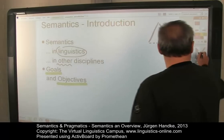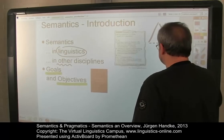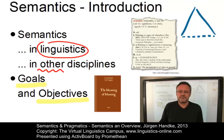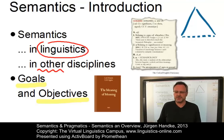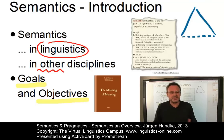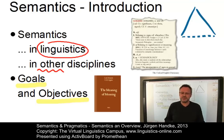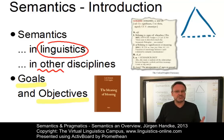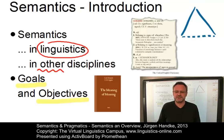The term semantics, originally a Greek term, is a recent addition to the English language. However, in its early use in the 19th century, the term was not used simply to refer to meaning but to its development — what we today call historical semantics.